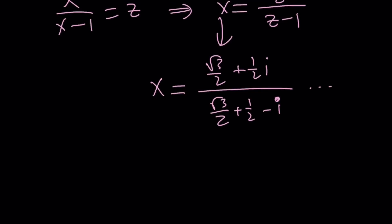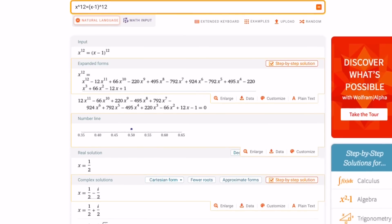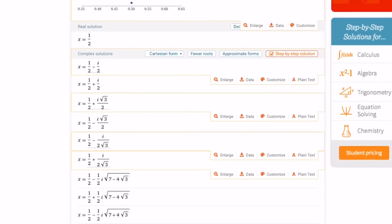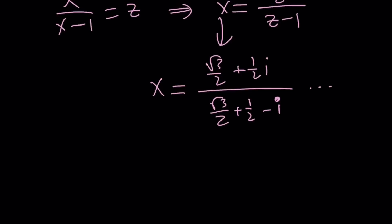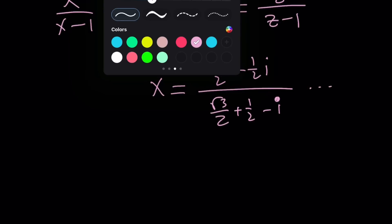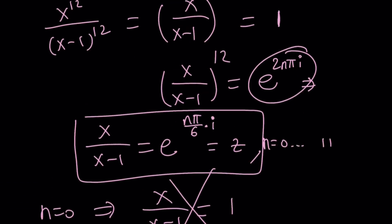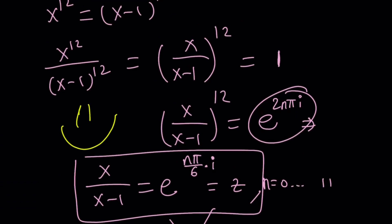Here are the solutions on Wolfram Alpha. As you can see, x to the 12 equals (x minus 1) to the 12 reduces to an 11th-degree polynomial. The real solution is x equals 1 half, and all the other solutions are complex — for example, (1 minus i) over 2, (1 plus i) over 2, and so on — for a total of 11 solutions. And this brings us to the end of this video. Thank you for watching. Please comment, like, and subscribe. See you tomorrow — be safe, take care, and bye-bye.